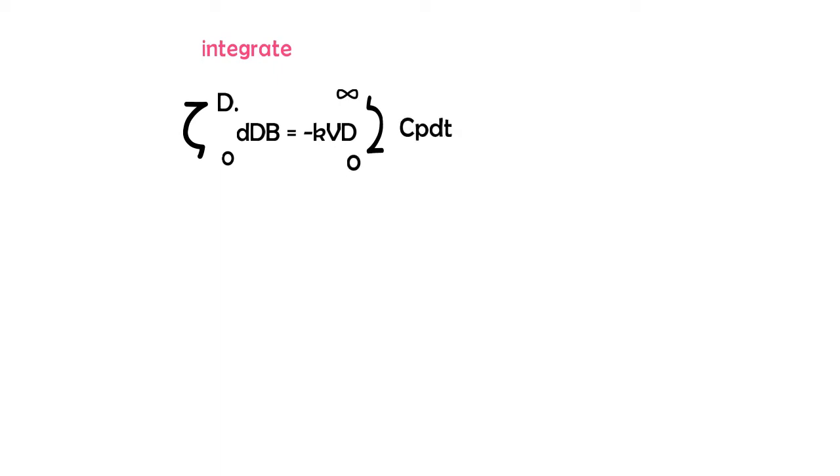So what we're going to do, I said the drug always wants to stay on the side. So we have dB is equal to k Vd and Cp dt is going to be replaced by area under the curve.